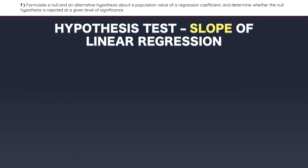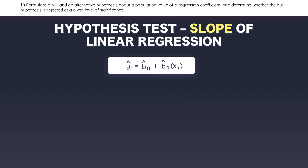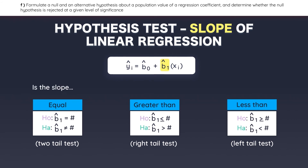This next section covers hypothesis tests for linear regression. Make sure you have completed the reading on hypothesis testing, because we will be building upon those concepts. The first type of hypothesis test we'll review is testing the slope coefficient. Whenever you have a linear regression, you can perform a hypothesis test to test the significance of the slope coefficient — asking whether the slope is statistically different from, greater than, or less than a given value.